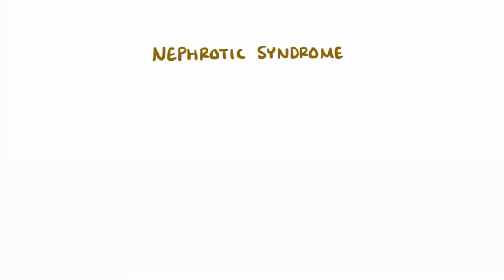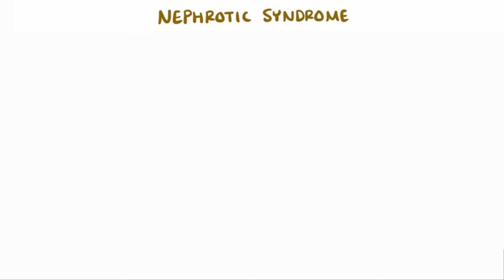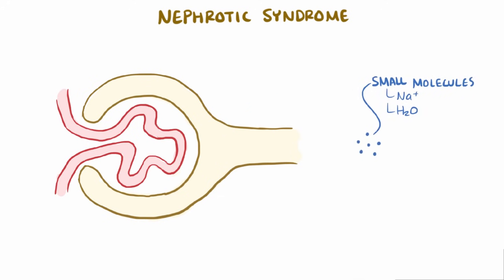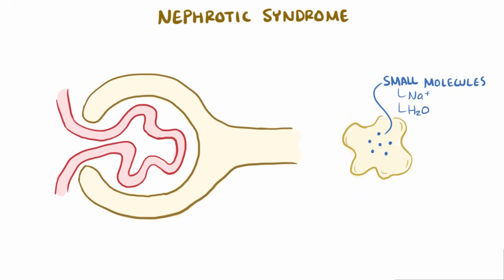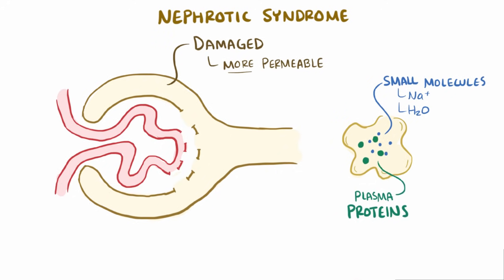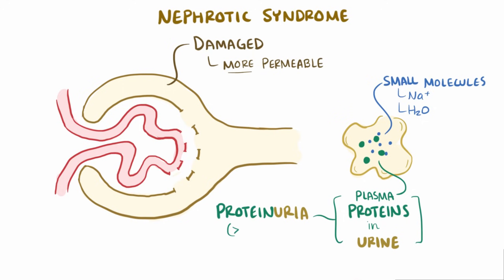But what exactly is nephrotic syndrome? Usually the glomerulus only lets small molecules, like sodium and water, move from the blood into the kidney nephron, where it eventually makes its way into the urine. But with nephrotic syndromes, the glomeruli are damaged and become more permeable, so they start letting plasma proteins come across from the blood to the nephron and then into the urine, which causes proteinuria, typically greater than 3.5 grams per day.